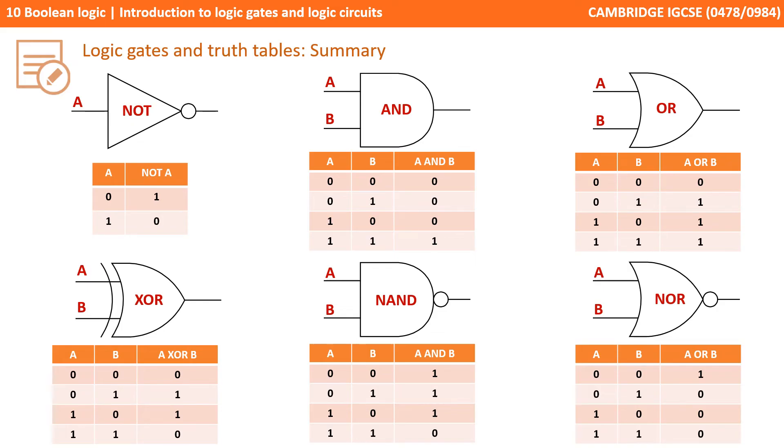On the screen now is a summary of the 6 different logic gates that you'll need to be familiar with for the exam and their associated truth tables. This underpins a lot of the work we'll do in the next video and everything about this topic. So pause the video and take some notes.